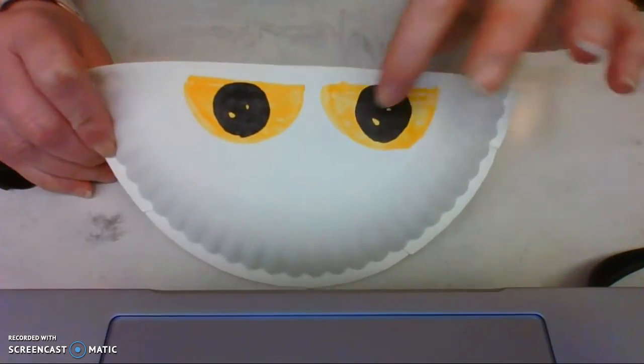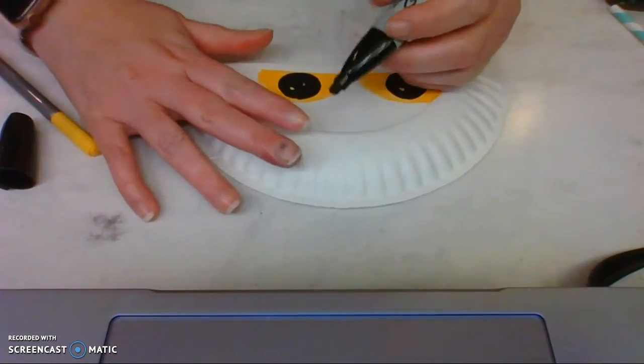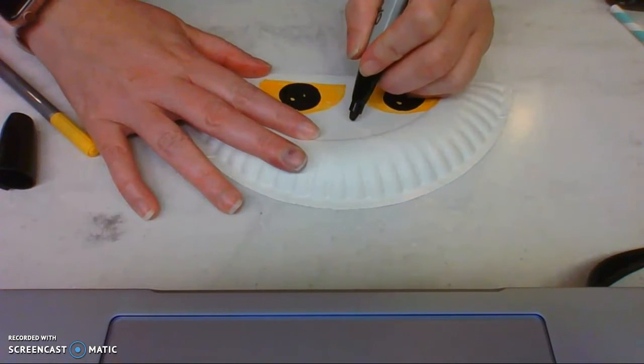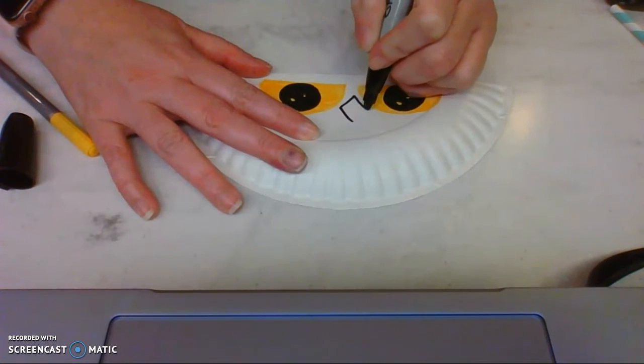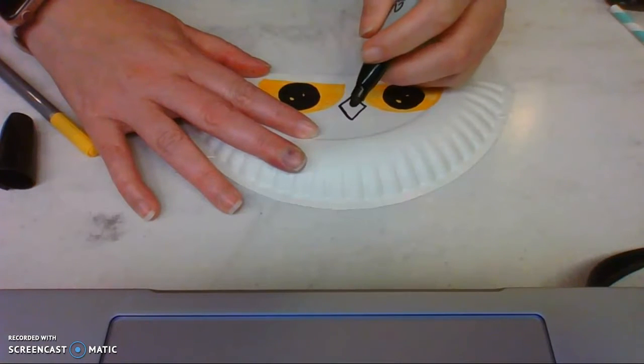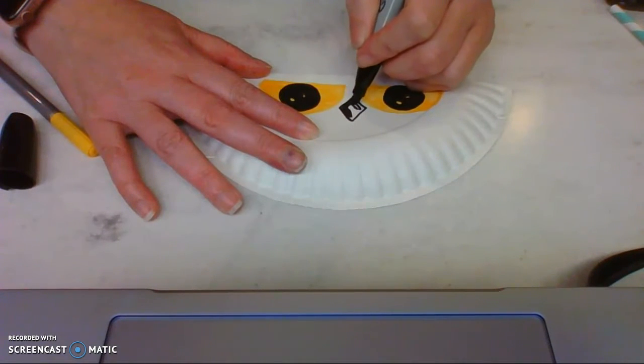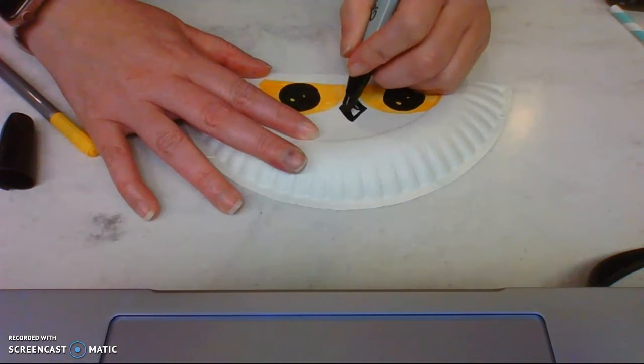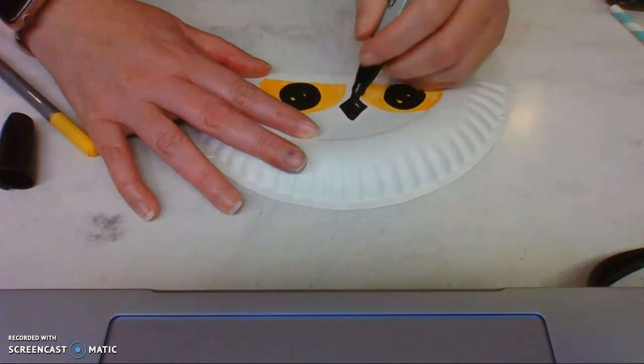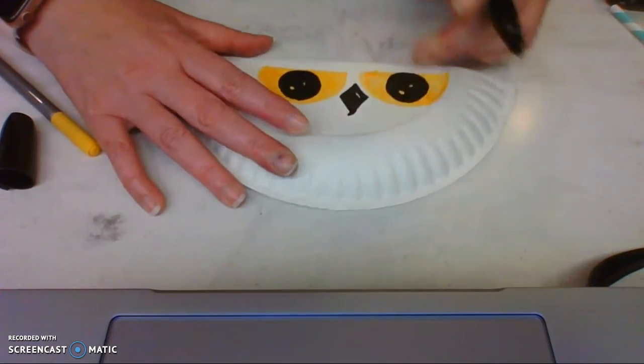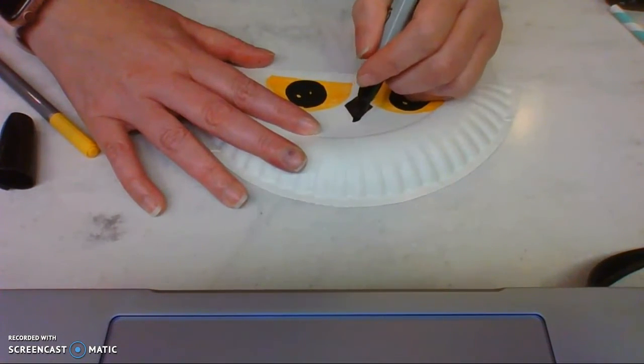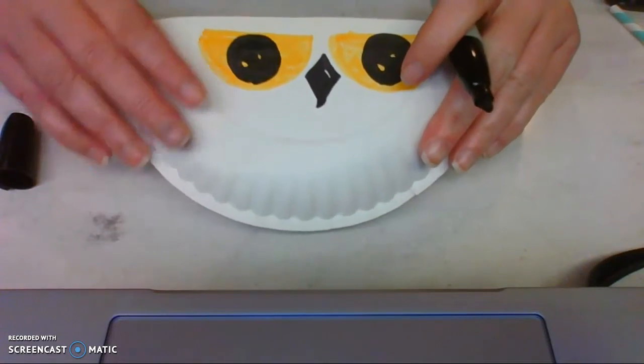Once I've colored in all my circles black, I'm then going to draw a diamond shape for my nose. And you can also leave a small little rectangle of white for the reflection on the little beak. I called it a nose, but it's actually a beak. And then at the bottom, I'm going to make it kind of curved at the bottom, because that's kind of how owl beaks are.